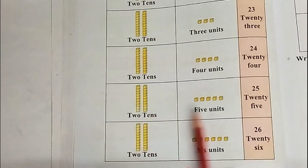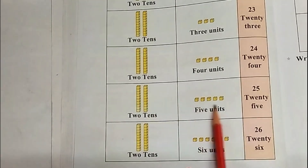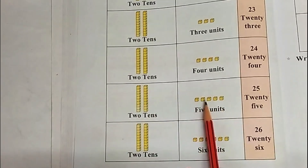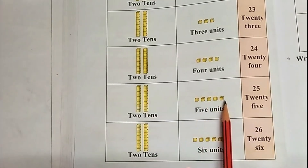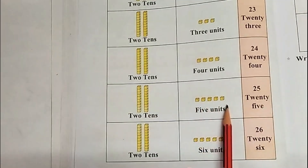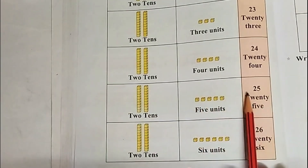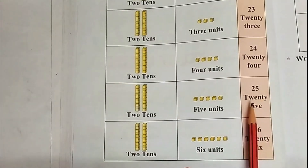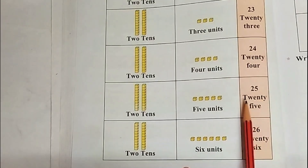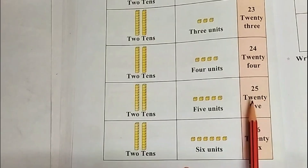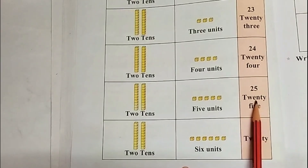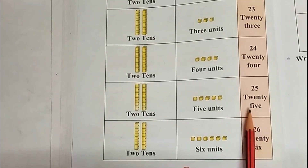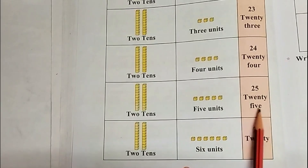1 tenth, 2 tenths, and 5 units: 25. In figure: 25. In words: T-W-E-N-T-Y (20) F-I-V-E: 25.